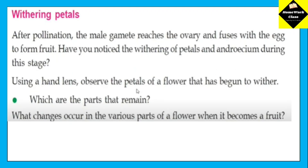Withering petals. After pollination, the male gamete reaches the ovary and fuses with the egg to form fruit. Have you noticed the withering of petals and androecium during this stage?